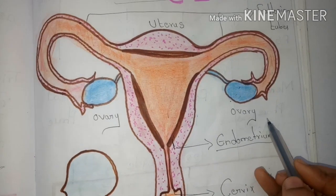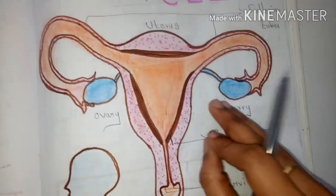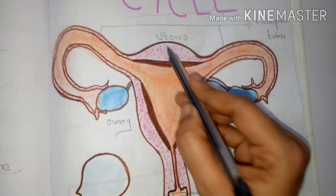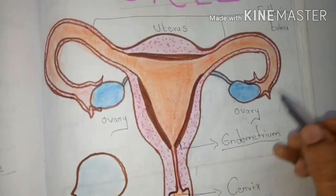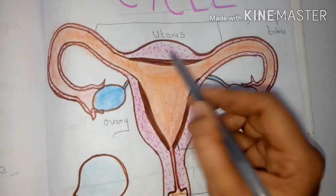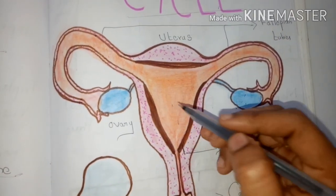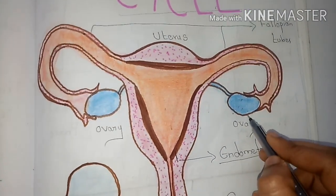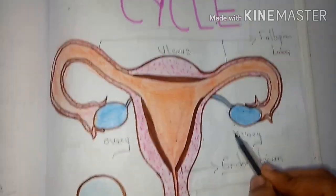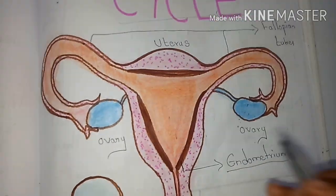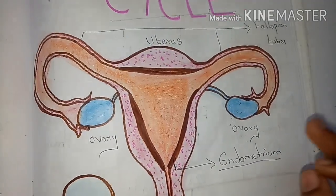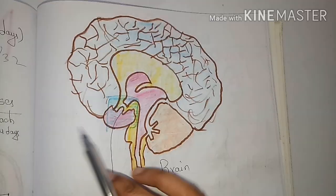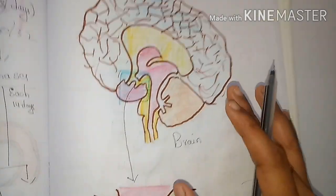Now we are going to learn about the ovarian cycle. In the previous video I already said that the menstrual cycle runs in the form of two cycles: the uterine cycle and the ovarian cycle. The changes which occur in the uterus are known as the uterine cycle, and the changes which occur in the ovary are known as the ovarian cycle. Today we are going to learn about the ovarian cycle.